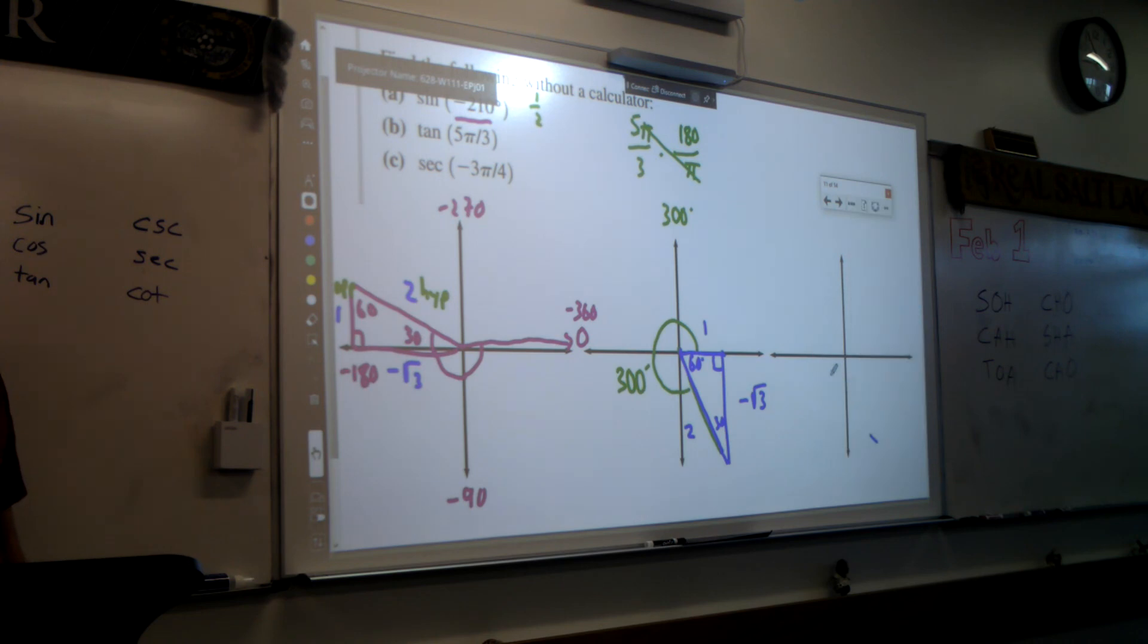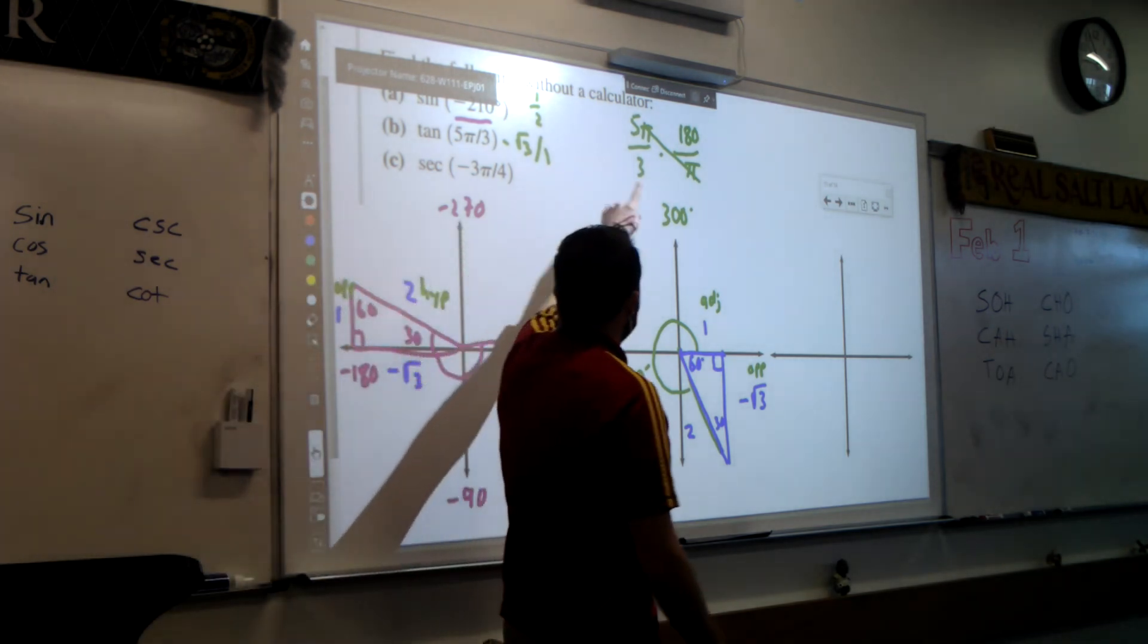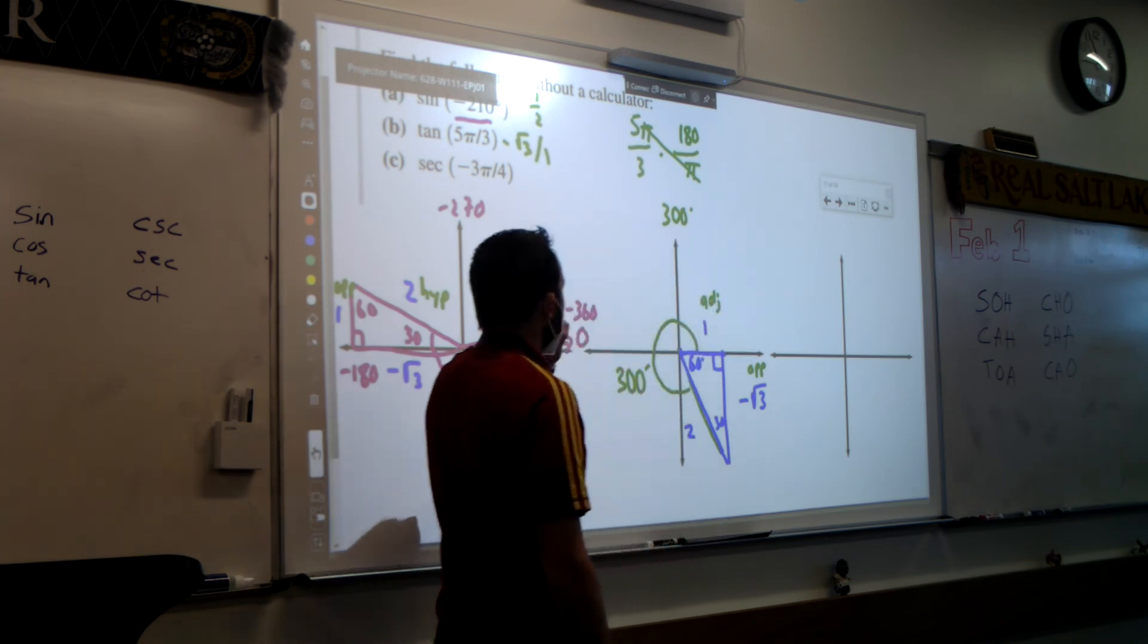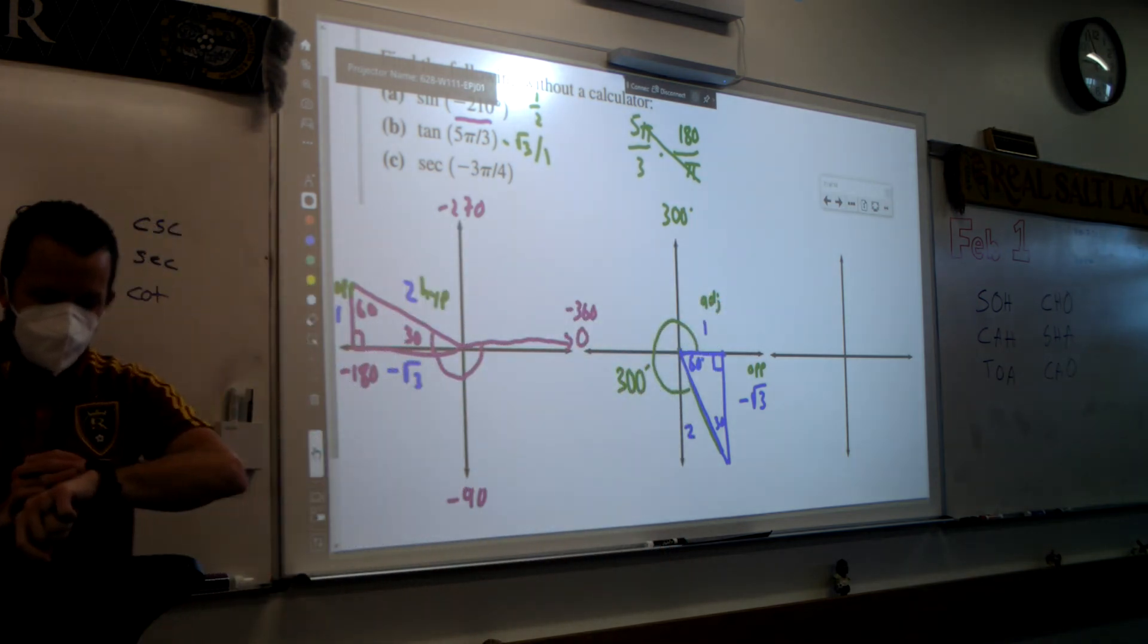Now we're asked to find the tangent. Tangent uses opposite over hypotenuse. So the tangent of 5 pi thirds is going to be negative square root of 3 over 1, so that's just going to be negative. Oh, I put that totally wrong. That's not hypotenuse, that's adjacent. Sorry. Opposite over adjacent. So that's going to be negative square root of 3 over 1. Do you have any questions on how I did B? I changed 5 pi thirds into degrees because I like degrees better. So that's a 30, 60, 90 triangle. And I did tangent's opposite over adjacent.